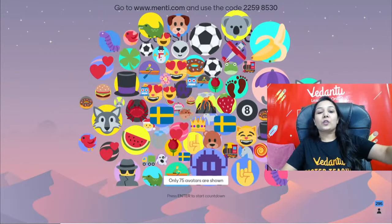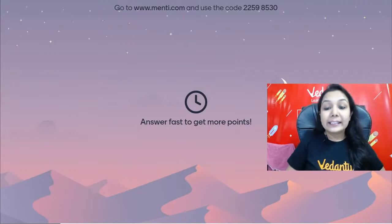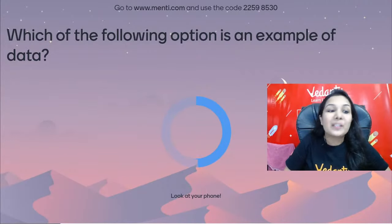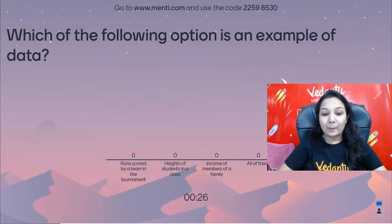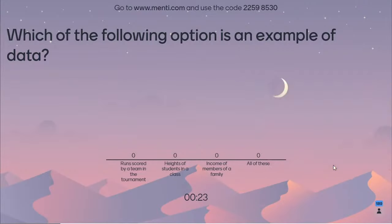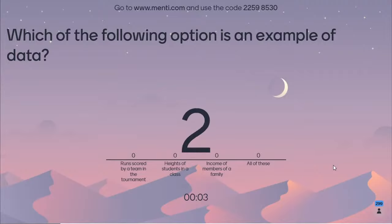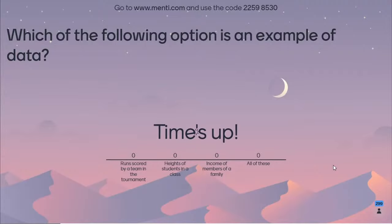Here comes question number 1. Which of the following is an example of data? Options: runs scored by a team in a tournament, heights of students in a class, income of members of a family, or all of these? The correct answer is all of these — all these are examples of data.